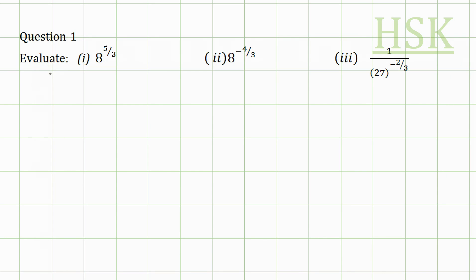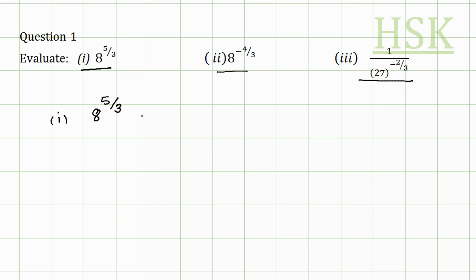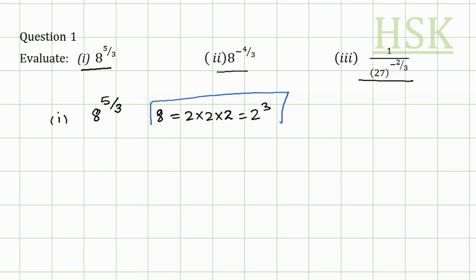Taking question number one, I'm going to evaluate these three parts. In the first part, I have to evaluate 8 to the power of 5 by 3. First, I can write 8 as 2 into 2 into 2, that is equal to 2 cube. So this value of 8, which is equal to 2 cube, I am going to substitute for it.